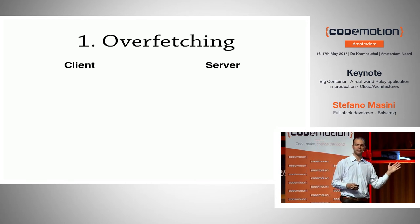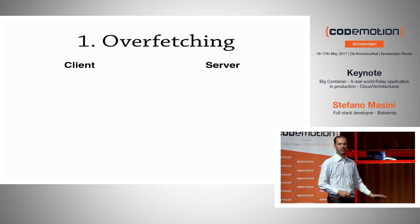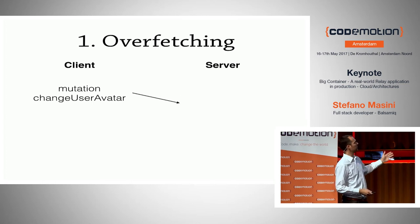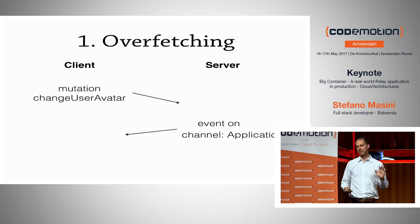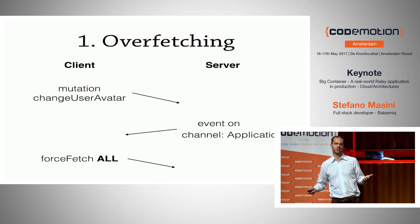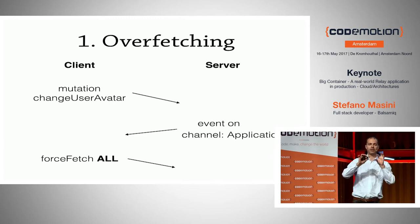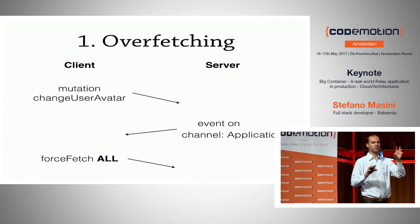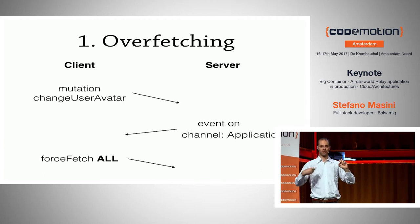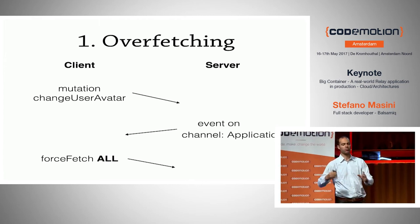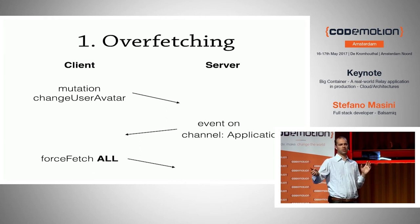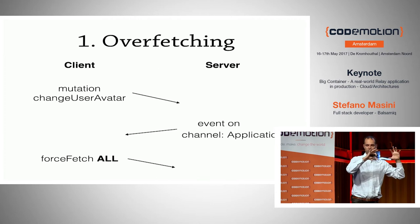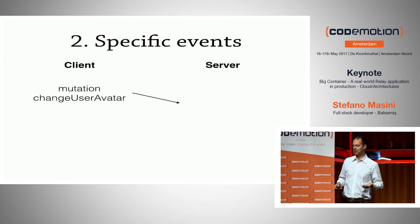Let's go over a couple of examples. Here's a naive example that yields overfetching — not a good solution but easy to follow. The client sends a mutation called 'changeUserAvatar.' The server changes the database, then sends a generic event on a channel called 'application.' On the client, every React component listens to events and when it receives one it will force-fetch — that's the Relay way to refetch from the server the information the component is displaying. This clearly solves the problem, but every component in the page will reload everything — clearly inefficient.